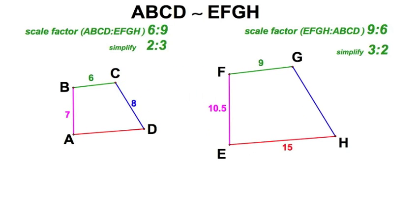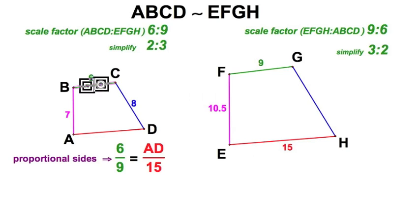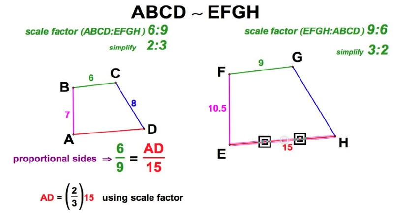Now let's look at two ways to find a missing side. I'm going to use the proportion established here: this side is to this side as this side is to this side. That's a legitimate proportion, and we could cross multiply. But let's do it another way. I could use the scale factor. I've determined the scale factor here is two to three, so very simply, AD - this side - is two-thirds of this one, and that would be ten.